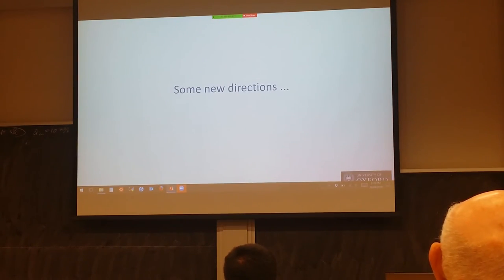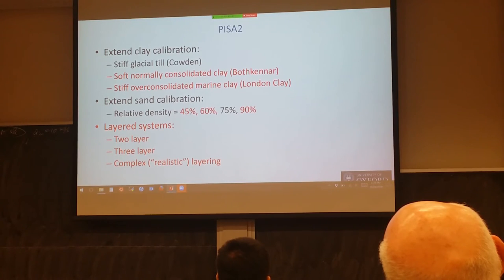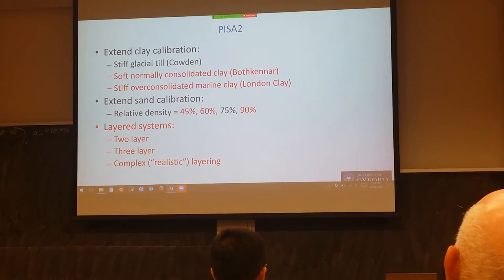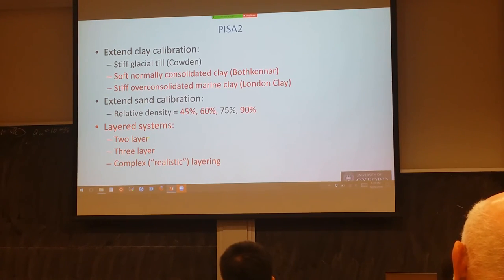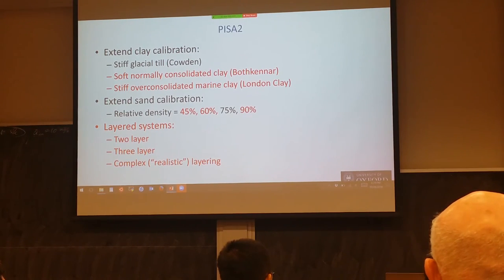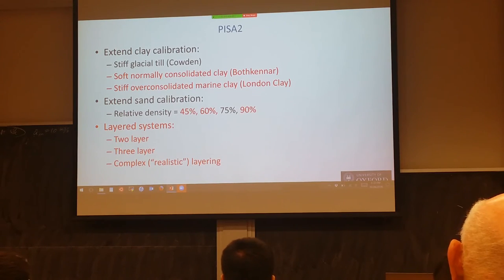There has been a follow-on project called PISA 2, which has been filling in the design method for other conditions. The original project dealt with items now shown in black; PISA 2 added items in red — looking at different clays, sands at different densities, and importantly, layered systems. In reality, soil is never a nice uniform deposit; it's typically a complicated layering system. We looked at simple two- and three-layer systems as well as quite complicated supposedly realistic layering, including different combinations of strong layers over weak and weak over strong.